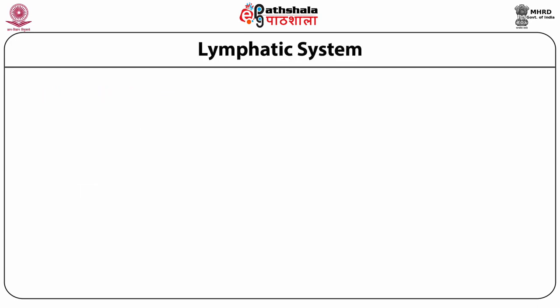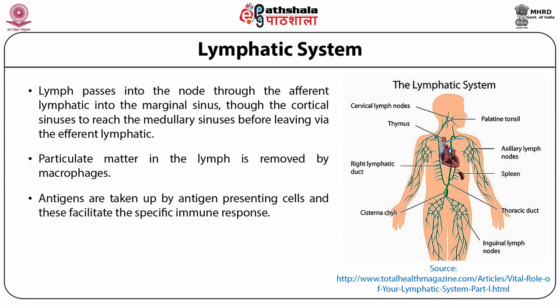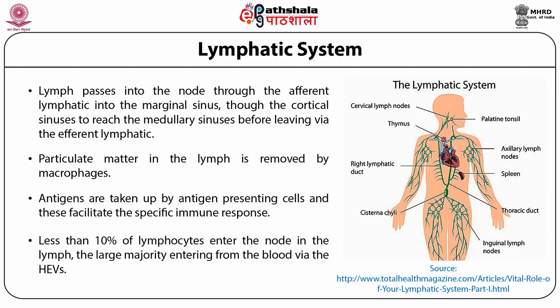Lymph passes into the node through afferent lymphatics into the marginal sinus, through the cortical sinuses, to reach the medullary sinuses before leaving via the efferent lymphatics. Particulate matter in the lymph is removed by macrophages. Antigens are taken up by antigen-presenting cells, which facilitate the specific immune response. Less than 10% of lymphocytes enter the node in the lymph, with the large majority entering the blood via the HEVs.